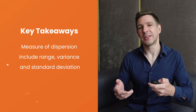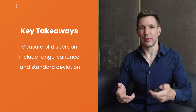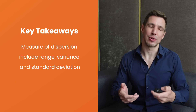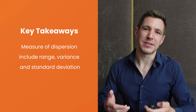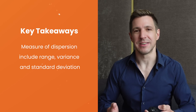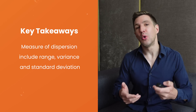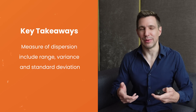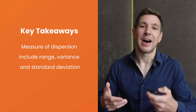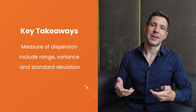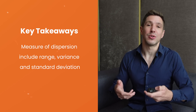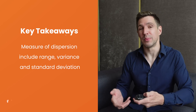And last but not least, we looked at measures of dispersion, which include range, variance, and standard deviation. All of these measures help you understand how dispersed your data are and in turn how to interpret your measures of central tendency.